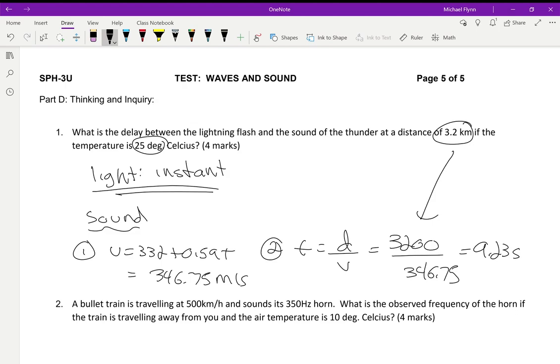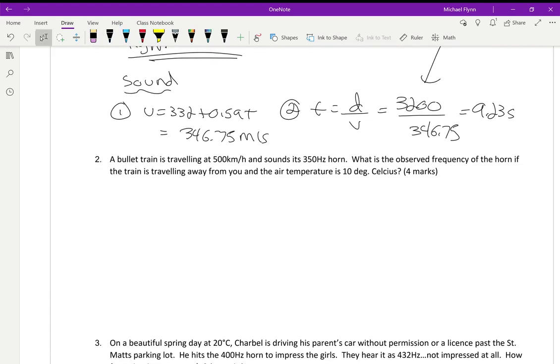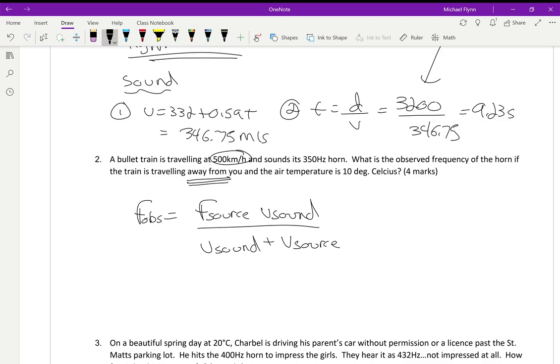A bullet train is traveling 500 kilometers per hour. What is the observed frequency? This is where you use f_obs equals frequency of source times the speed of sound divided by the speed of sound. Because it's traveling away from you, it's going to be plus the speed of the source. Now it's important that we convert that number - the speed of the train into meters per second. So it's 500 divided by 3.6, and I get 138.9 meters per second. I'm going to store that in my calculator.